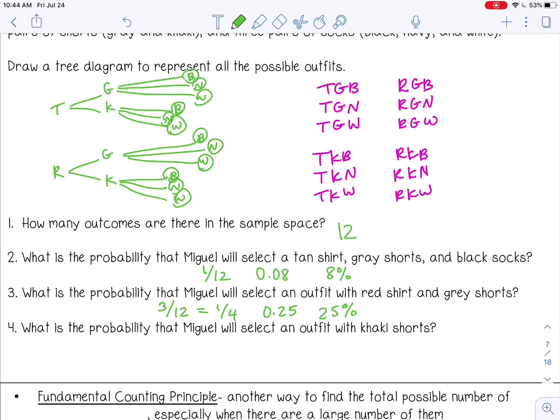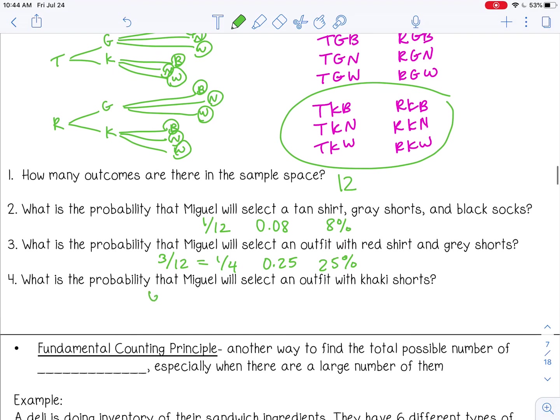And then what is the probability that Miguel will select an outfit with khaki shorts? That would be all of these. So 6 out of 12 or 1 half, 0.5, 50%.